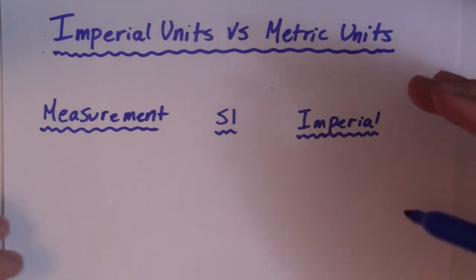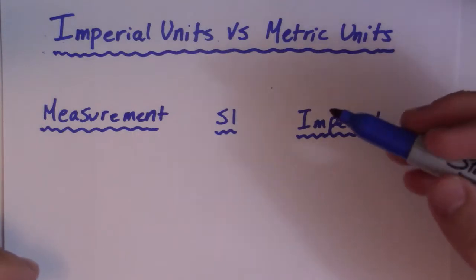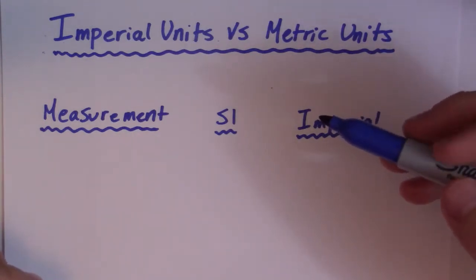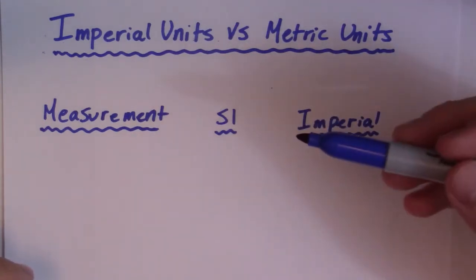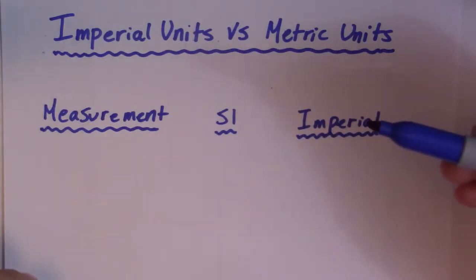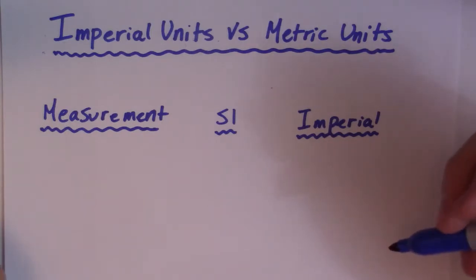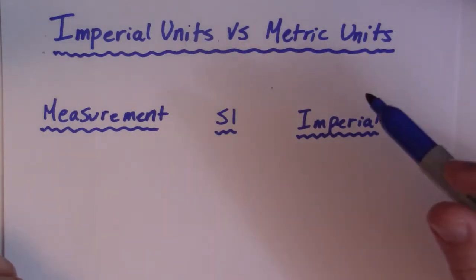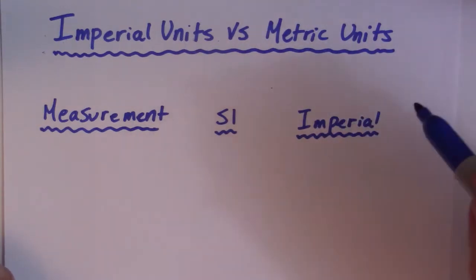If you ask anybody in Canada what their height is, they're going to tell you 5'7", 5'8". But if you look on their driver's license, they have it in centimeters. And the same thing with their weight. If you ask someone how much do you weigh, they might come back at 210 pounds.